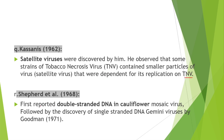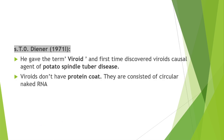Schiffer reported double-stranded DNA in cauliflower mosaic virus, followed by the discovery of single-stranded DNA Gemini virus by Goodman in 1971. T.O. Diener coined the term viroid and first discovered viroids as the causal agent of potato spindle tuber disease. Viroids do not have a protein coat and consist of circular naked RNA.